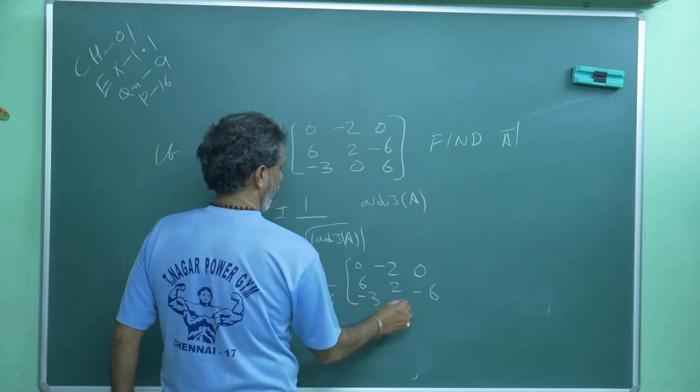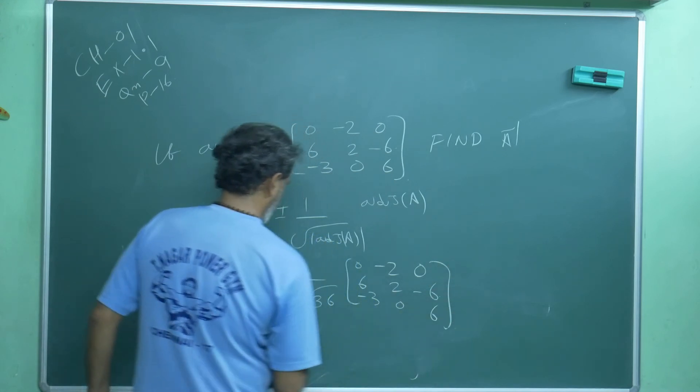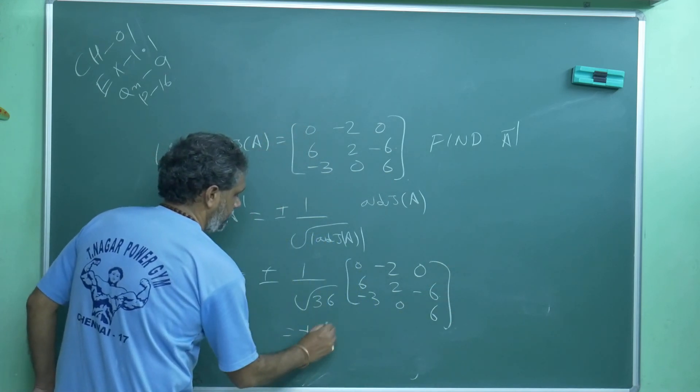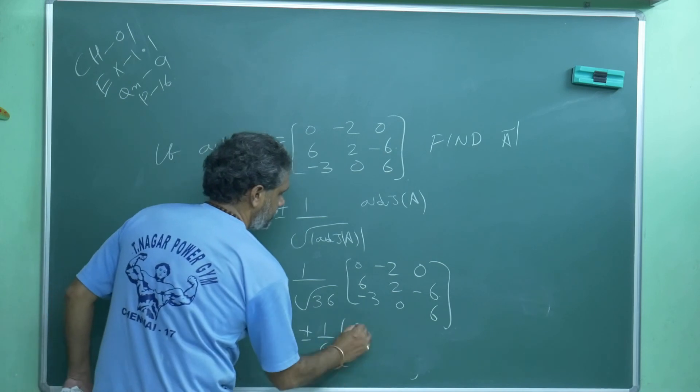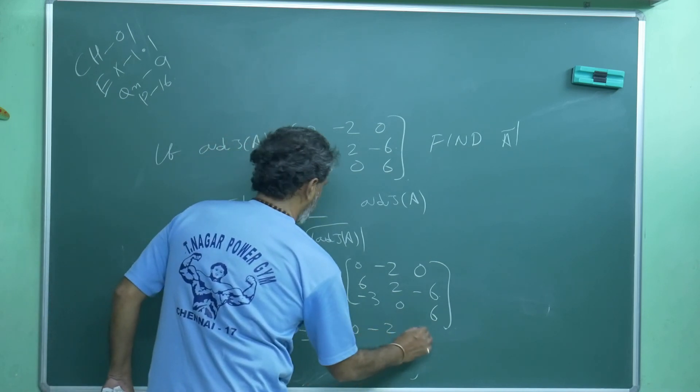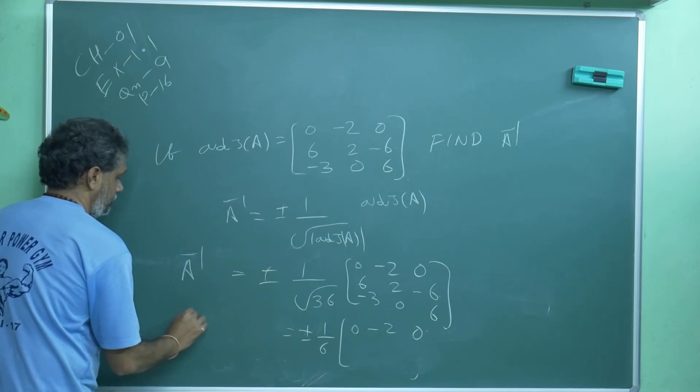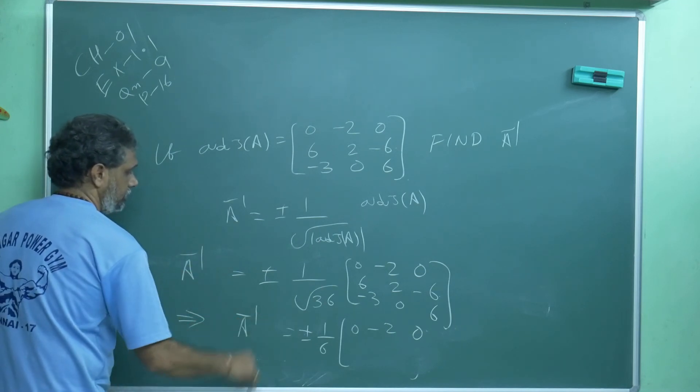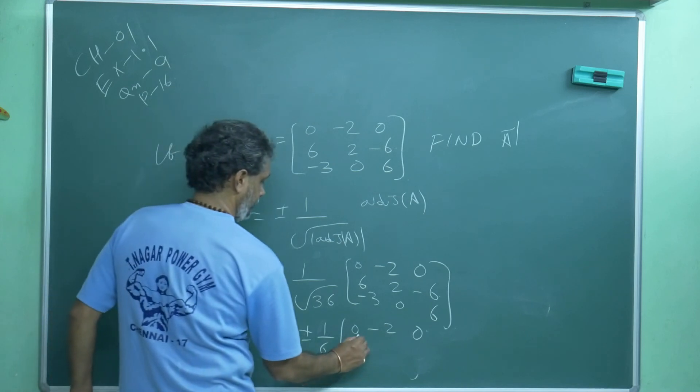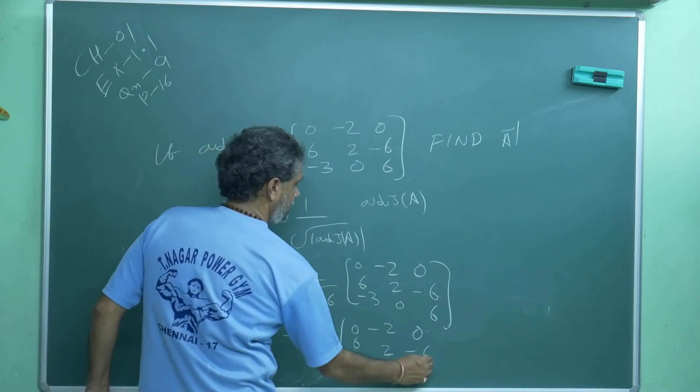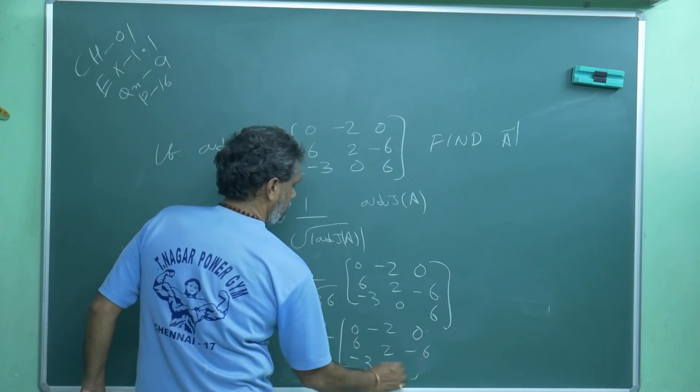Minus 3, 0, 6. So this is equal to plus or minus 1 by 6: 0, minus 2, 0, 6, 2, minus 6, minus 3, 0, 6. This is the inverse.